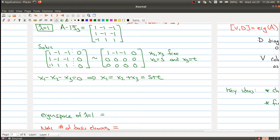The solutions to the system equation are x1, x2, and x3. We have x1 is s plus t, x2 is s, and x3 is t. We can break it up as s times the vector (1, 1, 0) plus t times the vector (1, 0, 1).